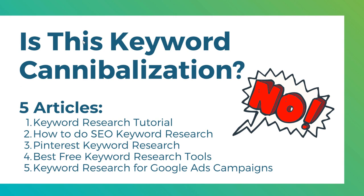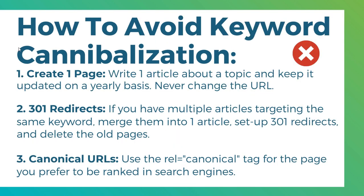Avoiding keyword cannibalization is actually pretty easy. Number one: just create one page. Write one article about a topic — like SEO trends — and keep it updated on a yearly basis. Rather than writing the 2018, 2019, and 2020 versions, write a page with the URL 'SEO trends' and keep it updated every single year. Number two: if you do have multiple articles targeting the same keyword, merge them into one article, set up 301 redirects, and delete the old pages.